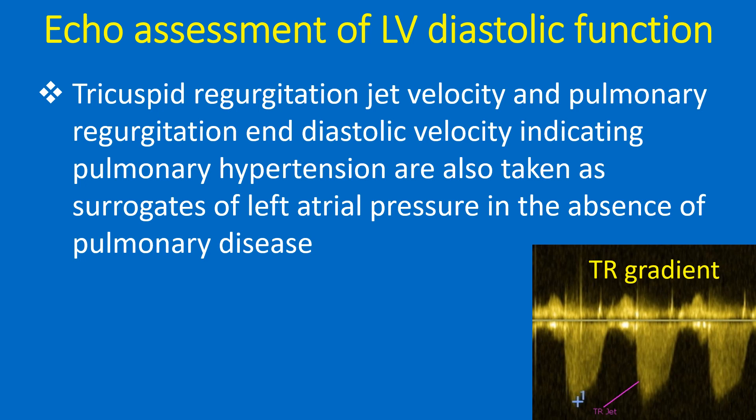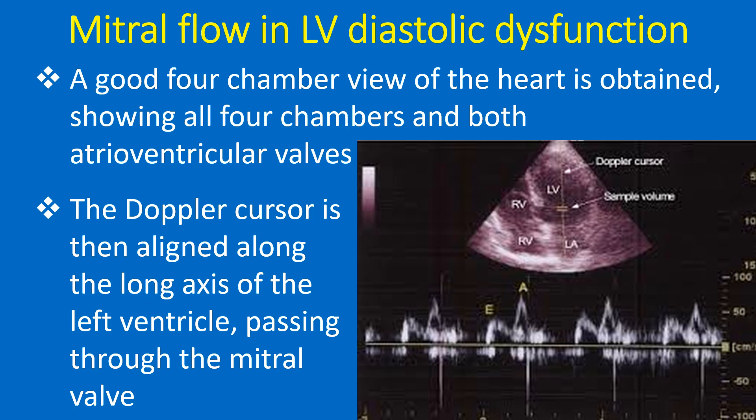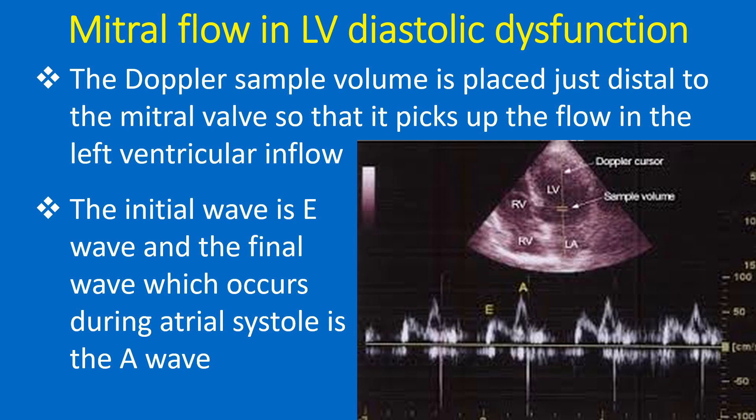Doppler interrogation of the mitral valve is usually done from the apex through the apical 4-chamber view. The transducer is placed directly over the apex beat and the echo beam is directed upwards. A good 4-chamber view of the heart is obtained, showing all 4 chambers and both atrioventricular valves. The Doppler cursor is then aligned along the long axis of the left ventricle passing through the mitral valve, and the sample volume is placed just distal to the mitral valve to pick up flow in the left ventricular inflow.